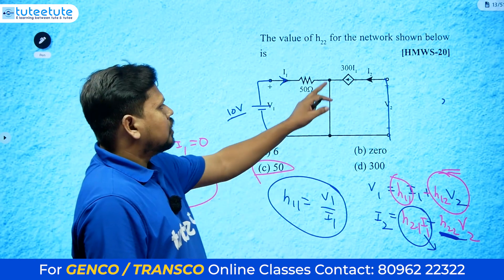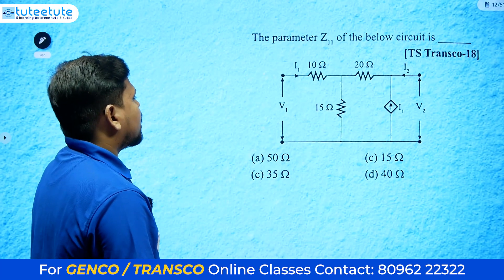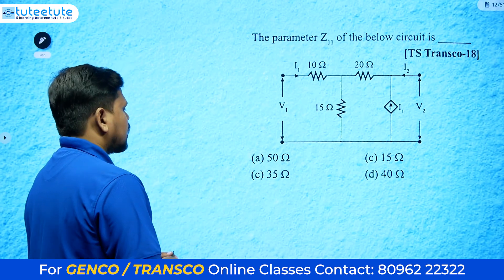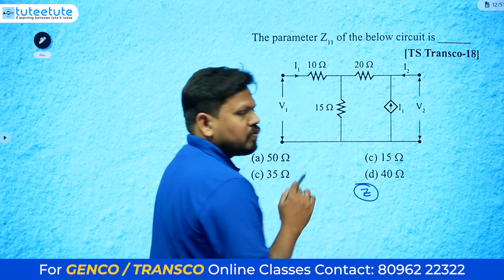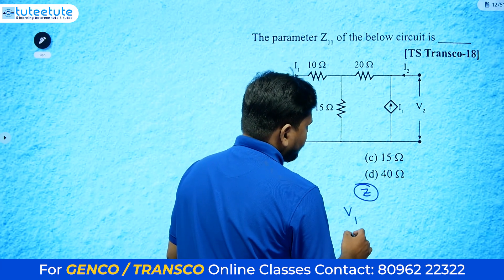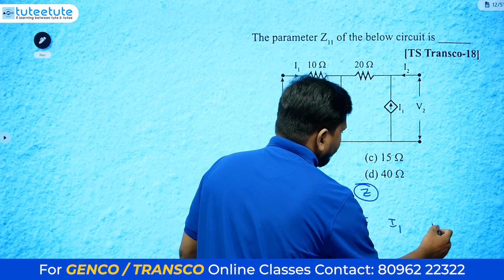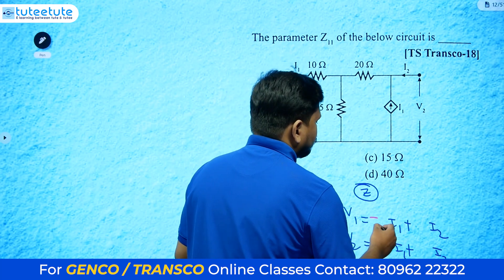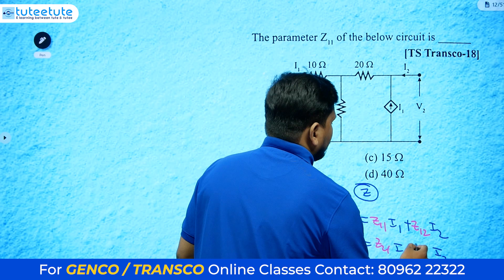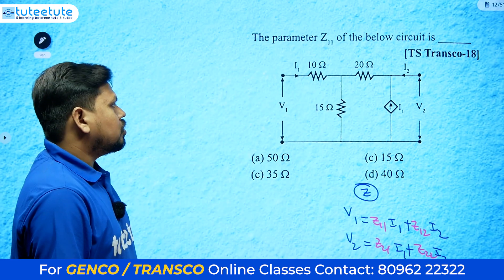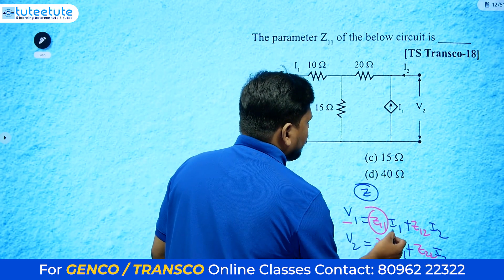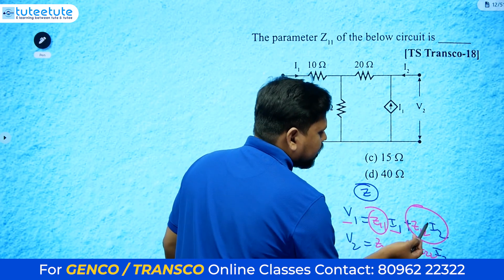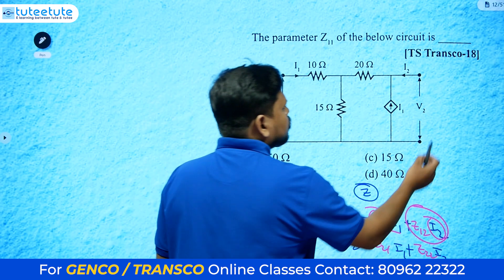The next question asks for the parameter z11 of a given circuit. For two-port z-parameters, we write: v1 = z11*i1 + z12*i2 and v2 = z21*i1 + z22*i2. They are asking for z11, which equals v1 divided by i1. To isolate z11, we make i2 equal to zero — meaning the output port is open circuit.